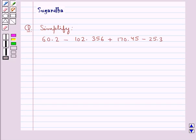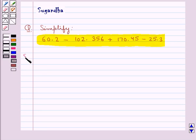Hello and welcome to the session. In this session we discuss the following question which says simplify 60.2 minus 102.356 plus 170.45 minus 25.3. Let's see the solution now.